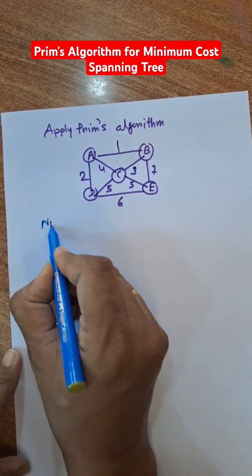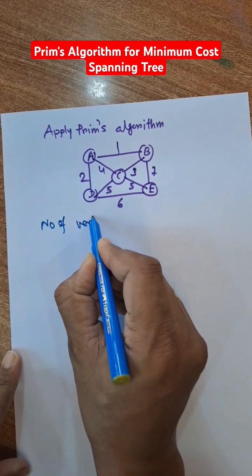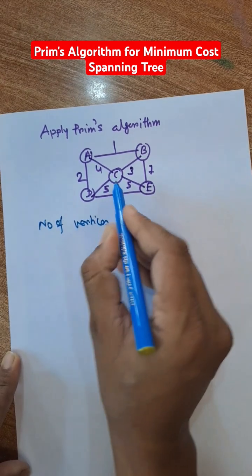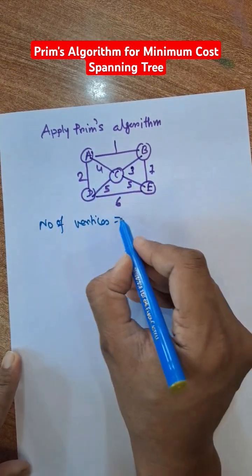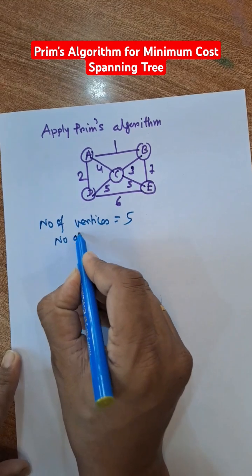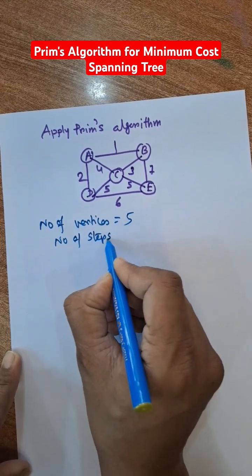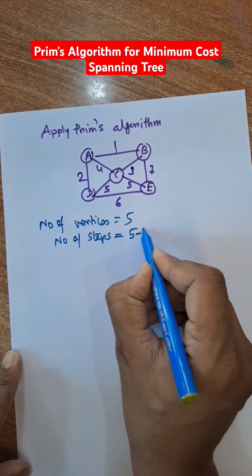Here the number of vertices equals 1, 2, 3, 4, 5. So the number of steps will be 5 minus 1 equal to 4.